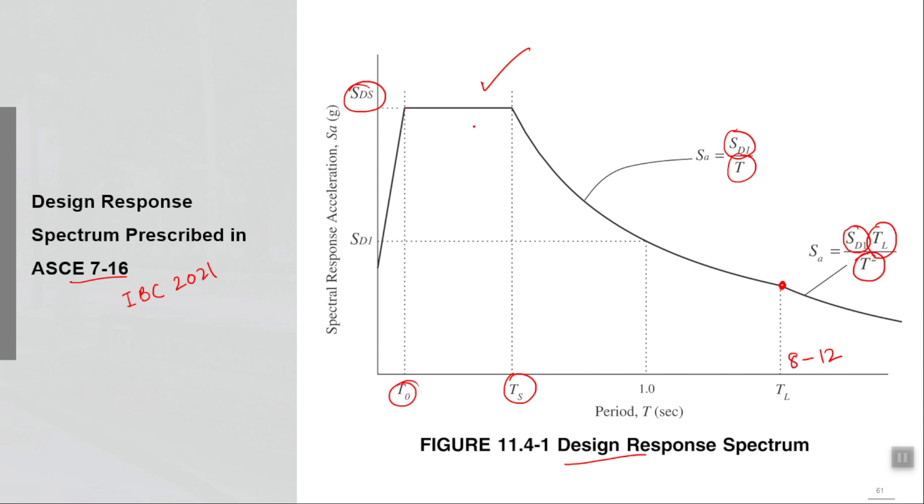T is varied. You will vary T yourself from, it cannot be exactly theoretically zero, so maybe 0.01 to 5 second or 6 second for example, up till where you want to plot that spectrum.